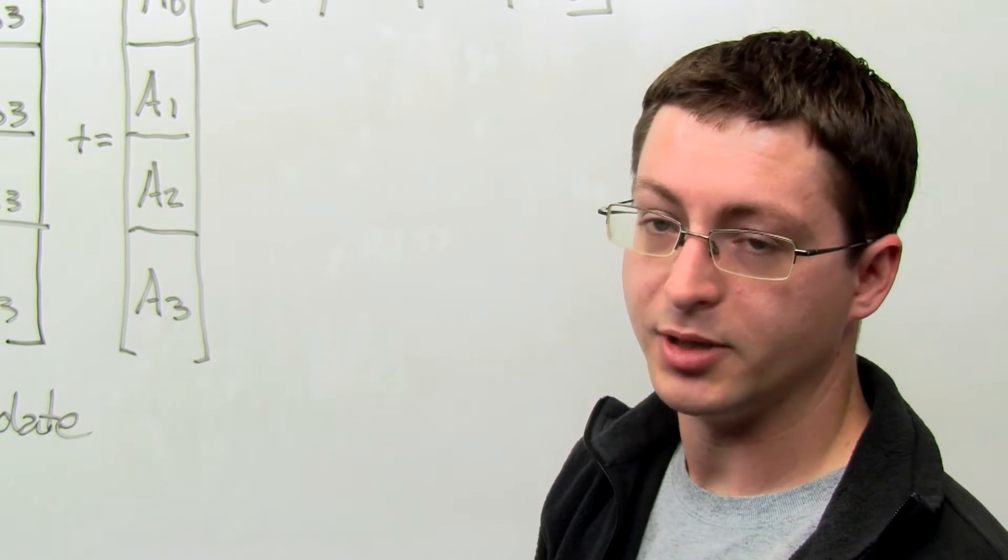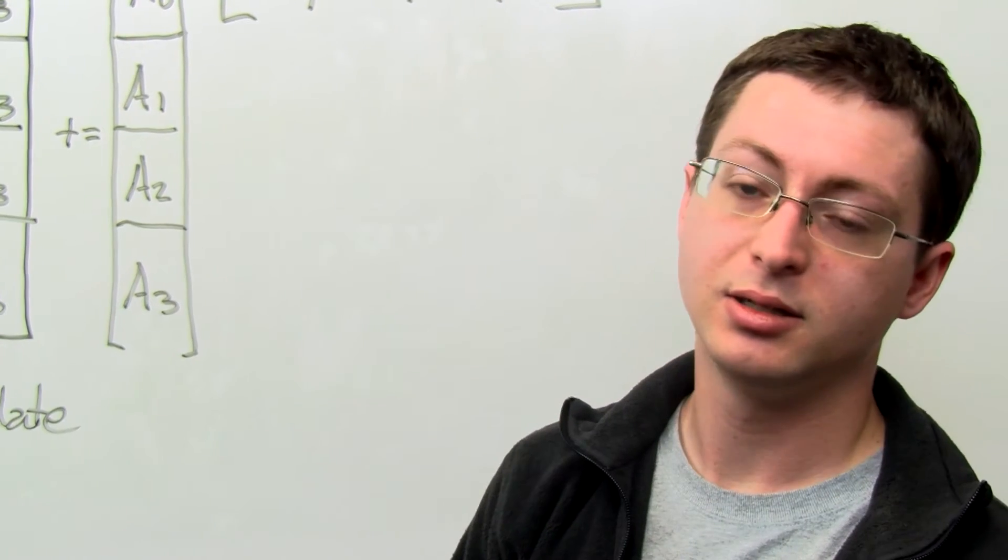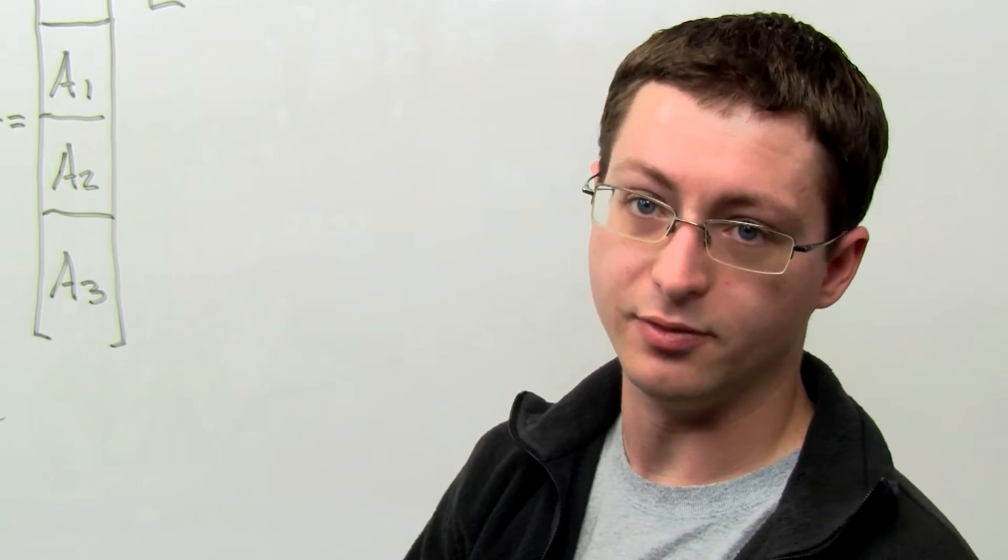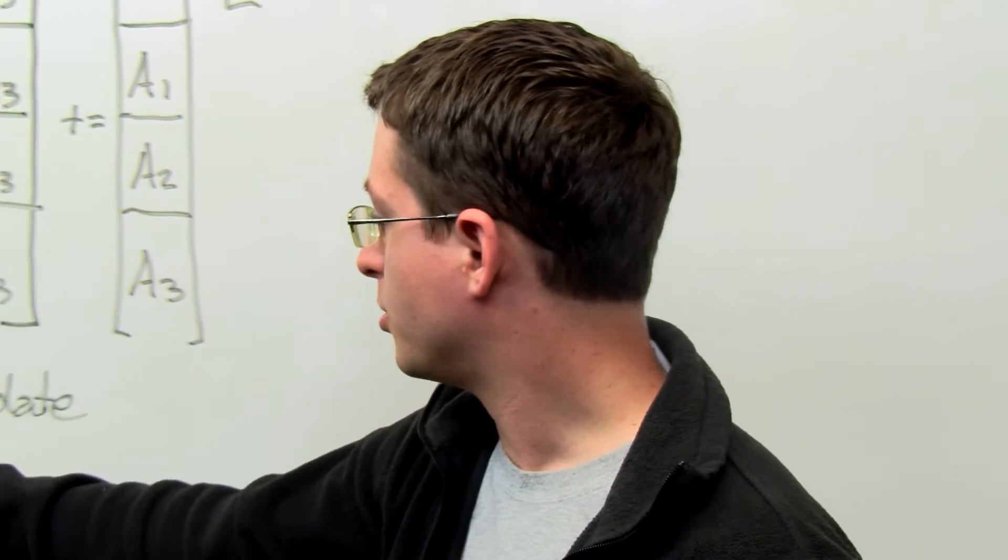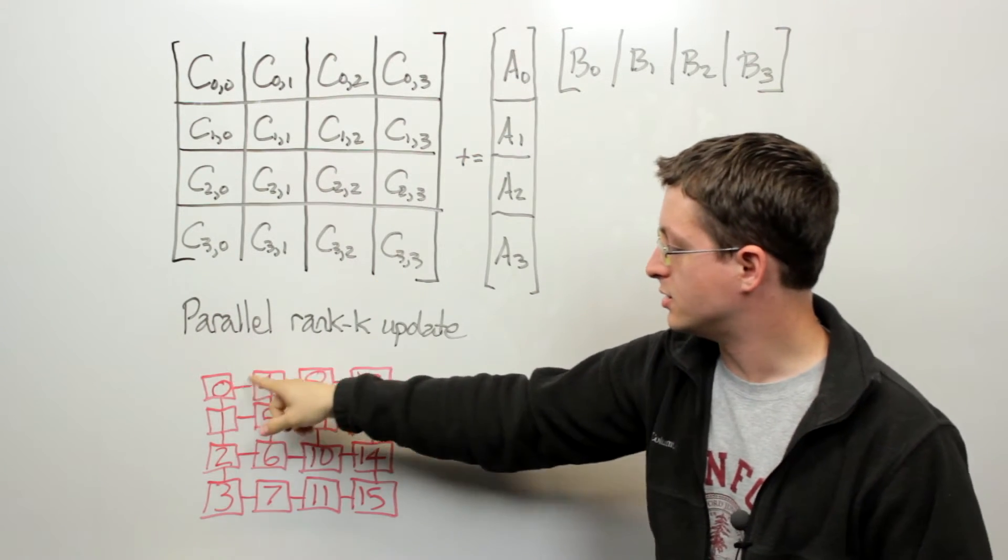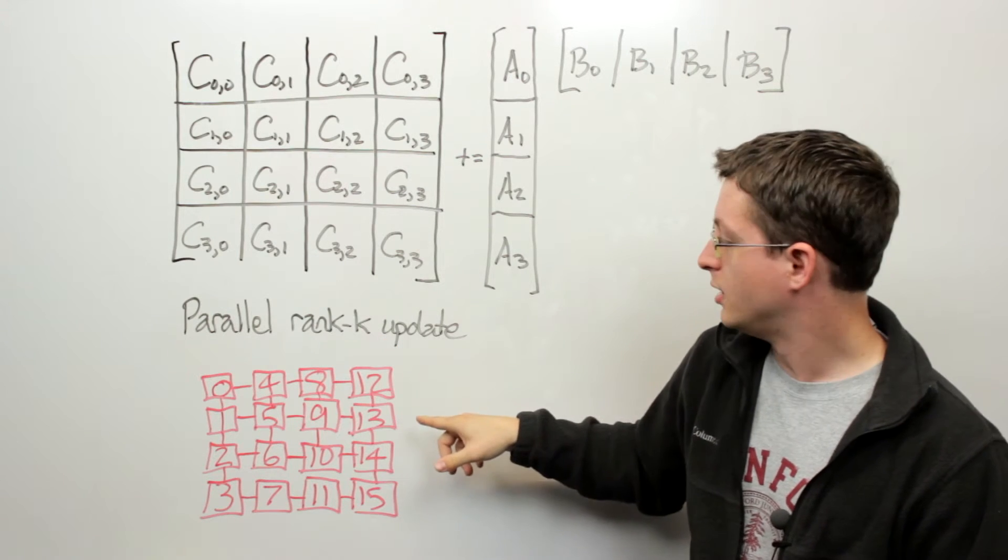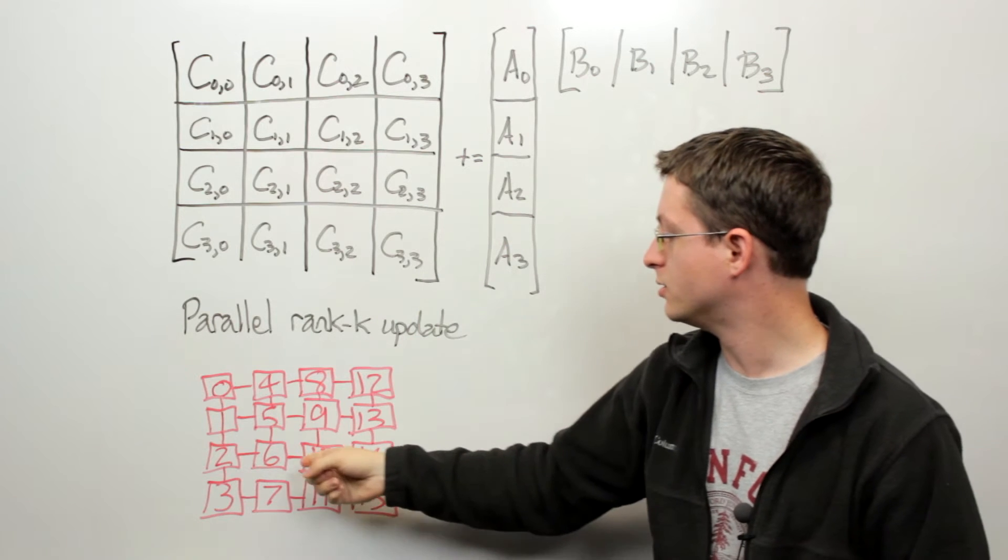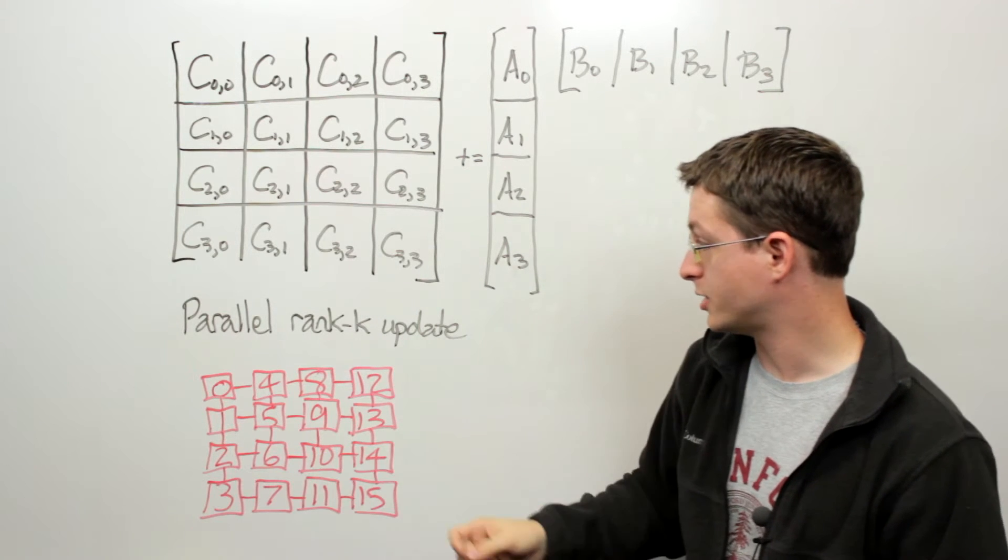But what we would need in order to perform this computation is to broadcast this whole matrix A within rows of the process grid. So process 8 would want to give its copy of A sub 0 to processes 0, 4, and 12. And then likewise process 10 would want to give its copy of A2 to processes 2, 6, and 14.